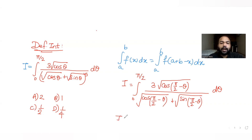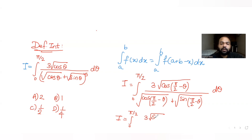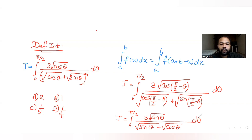So you get I as the integral from zero to π/2, where cos(90° - θ) becomes sinθ, so the numerator becomes cube root of sinθ. Now if I add both expressions — let's call the original equation (1) and the new one (2).